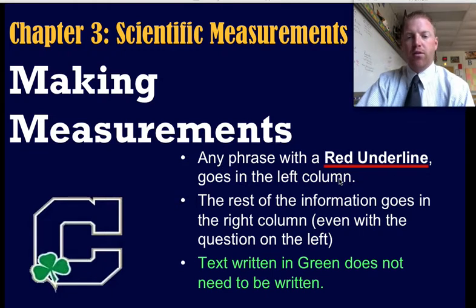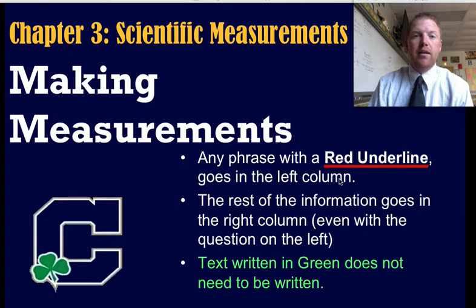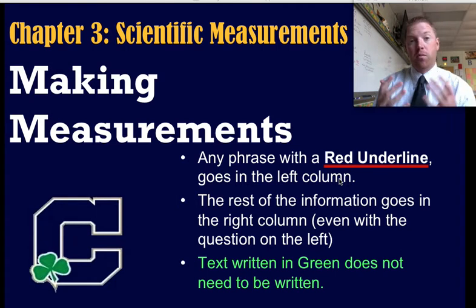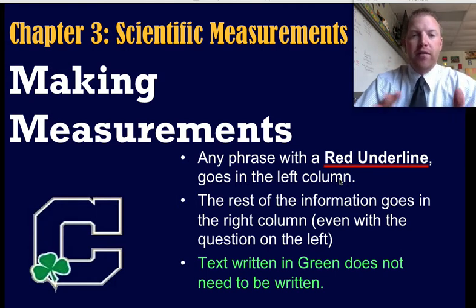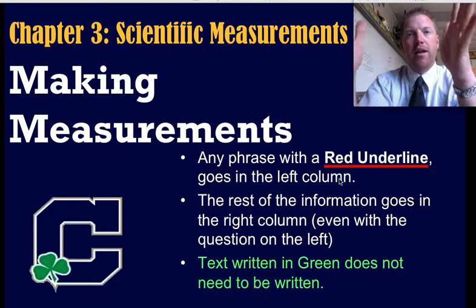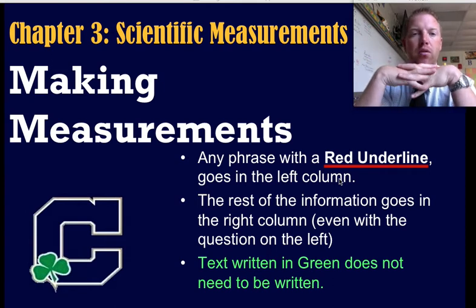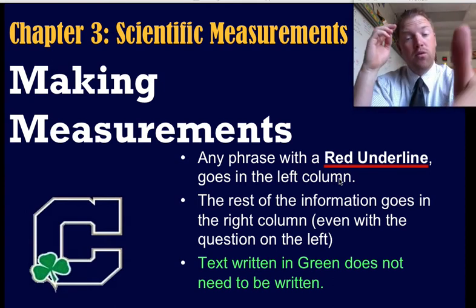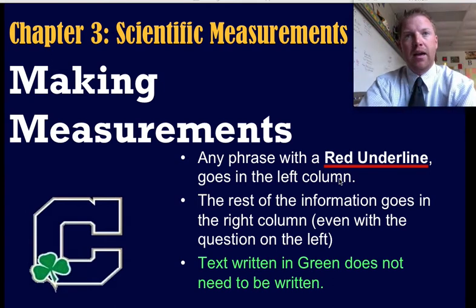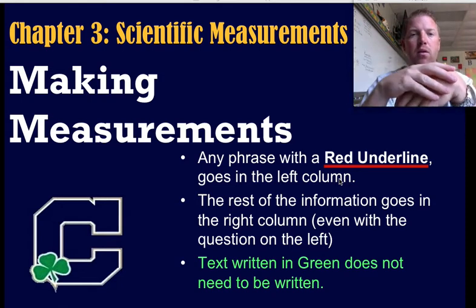The first one says any phrase with a red underline goes in the left column. Those are like main ideas. Those are questions we're trying to get answered. That's the whole purpose for taking notes. The rest of that information will then go on the right side of your notes if you're taking Cornell notes. If you're not, then use the red underlines as like headings and then the rest of the stuff would be the notes that go underneath it.